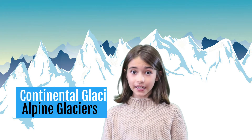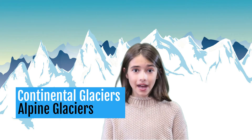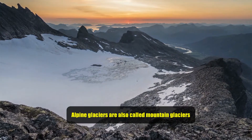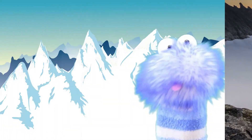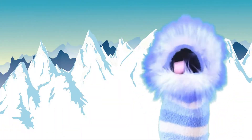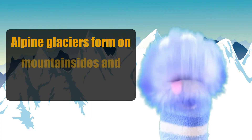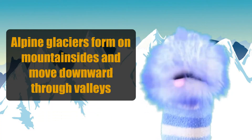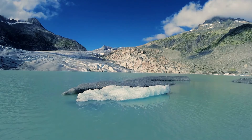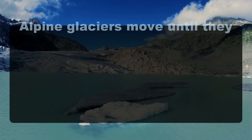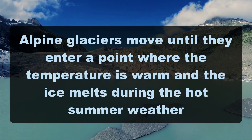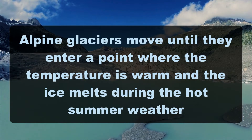There are two different kinds of glaciers: continental glaciers and alpine glaciers. Alpine glaciers are also called mountain glaciers. Alpine glaciers form on mountain sides and move downward through valleys, and they are smaller than continental glaciers, which we'll learn about in a moment. Alpine glaciers move until they enter a point where the temperature is warm, and then the ice melts during the nice, warm, hot summer weather.